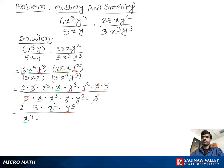2 times 5 is 10, and when dividing like terms, we subtract the powers. So we can write x^(6-4) times y^(5-4), which gives us 10x^2y.